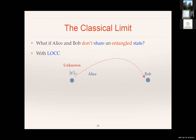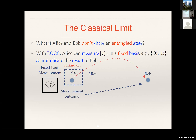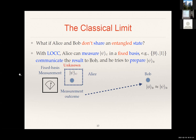In this case, what they could actually do, for example, is the following. They could agree on a strategy beforehand that Alice would perform measurements on this unknown state in some fixed basis — for example, in the 0-1 basis — and then communicate this measurement outcome to Bob. Then Bob would try to reconstruct the states based on this classical information, meaning the measurement basis and also the measurement outcome. If this choice happens to coincide, or maybe if one of these is close to the unknown state, then you can expect the result to be very similar to the unknown state to be teleported.